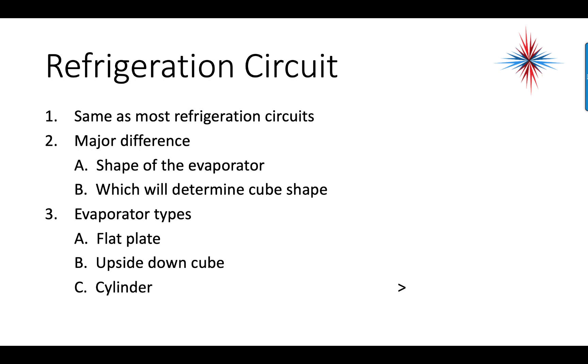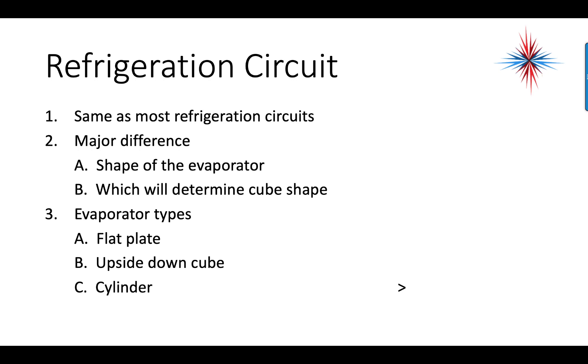The refrigeration circuit in ice machines is the same as most refrigeration circuits. The major difference is the shape of the evaporator, which determines cube shape. The evaporator types could be flat plate, upside-down cube, or cylinder. It uses a standard low-temperature condensing unit. The metering device could be TXV, cap tube, or AEV. Refrigerant in the years past, and you may still come across ice machines that use them, is R12 and 502. But today, most often, you're starting to see many other types of refrigerant. One I'm seeing very frequently is 134A.